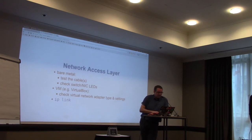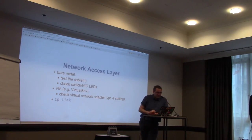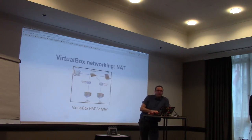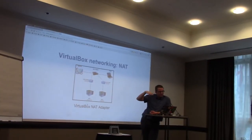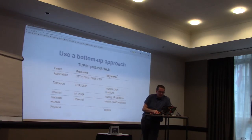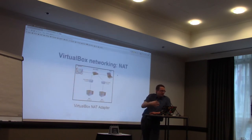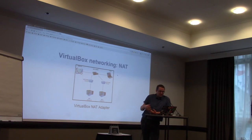If you are working on a virtual machine, it's important to check the network adapter type and settings. An interesting command to try on the command line is ip link. IP is going to be used quite a lot in the process. ip link shows you an overview of your network interfaces and whether there is a signal on them or not. The virtual machines have two network interfaces: one is the NAT interface and the other is a host-only. When troubleshooting, it's important to know the expected IP addresses and what network your hosts should be in.